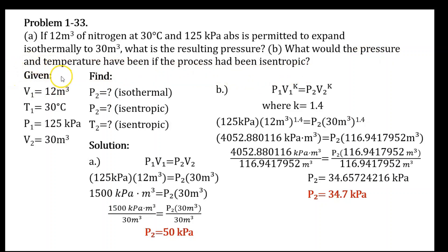Let's identify the given values in the problem. We have 12 cubic meters as our initial volume, 30 degrees Celsius as our initial temperature, 125 kilopascal as our initial pressure, and 30 cubic meters as our final volume. We are asked to find the final pressure for the isothermal process, and the final pressure and final temperature for the isentropic process.